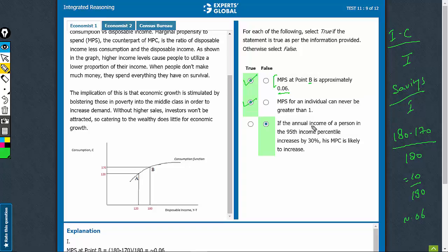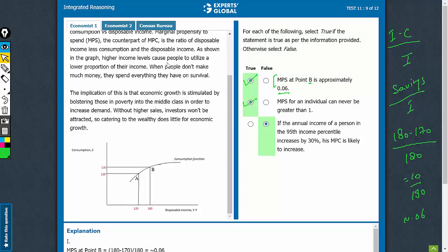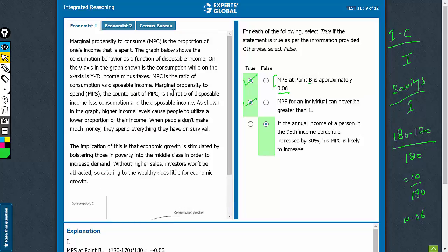The last one, if the annual income of a person, the 95th percentile increases by 30%, his MPC, that is his propensity to consume is likely to increase. So no, that's not correct. That's what the entire argument of Economist 2 is all about, that although incomes increase, the spendings don't increase and this relates to what Economist once said that those in the higher income levels don't intend to spend much.